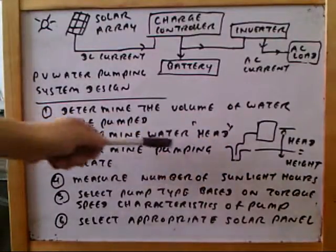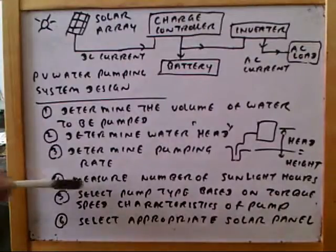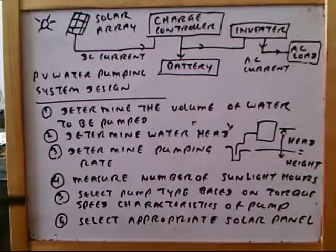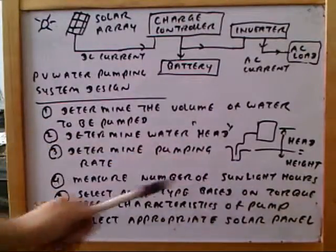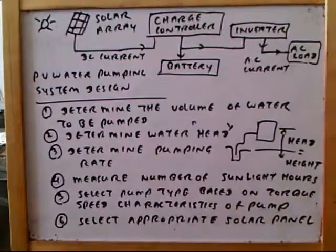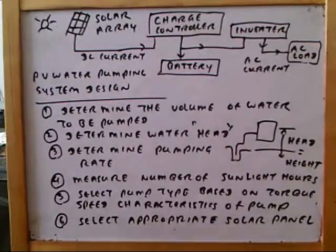Step 4: measure the number of sunlight hours. Step 5: select the pump type based on the torque speed characteristics of the pump. Step 6: select the appropriate solar panel. These are the steps that need to be followed to design a PV water pumping system.